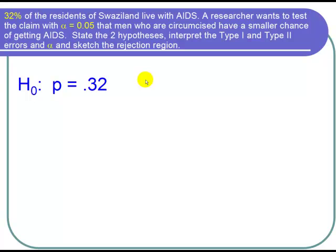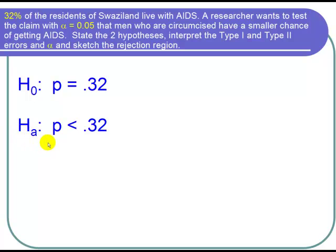Our alternative hypothesis comes from looking at the keyword: smaller. We want to find out if there's a smaller chance when they're circumcised. So the alternative hypothesis, written as Hₐ, is that P is less than 0.32.